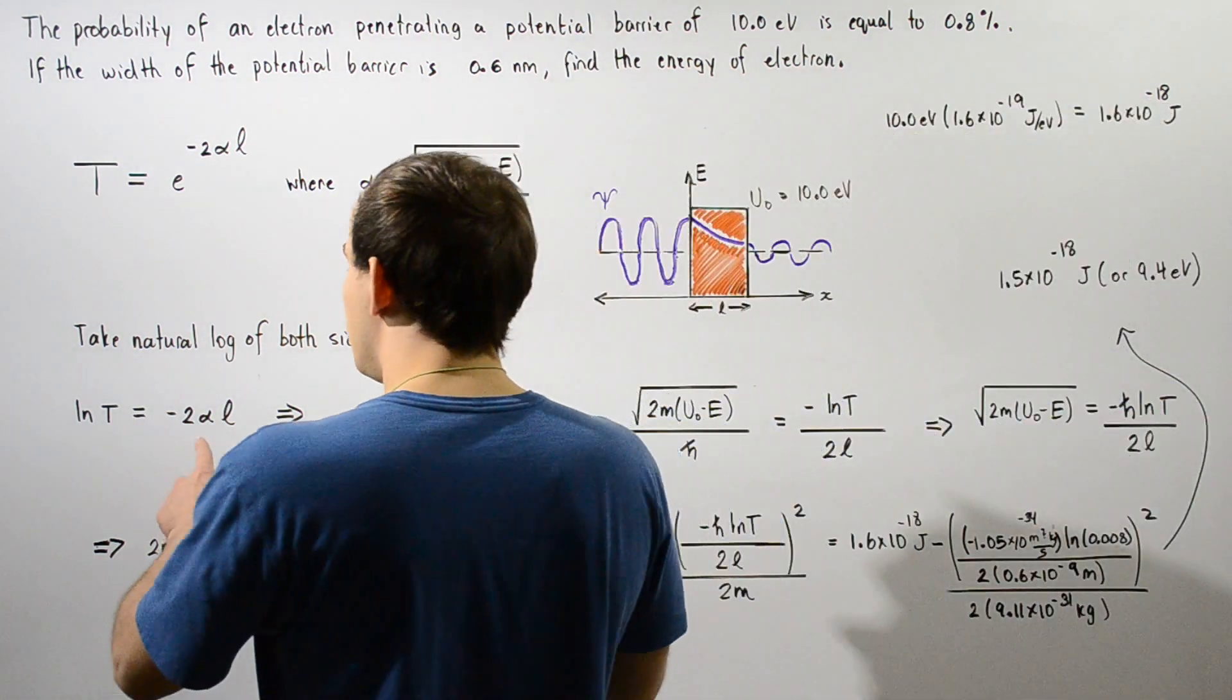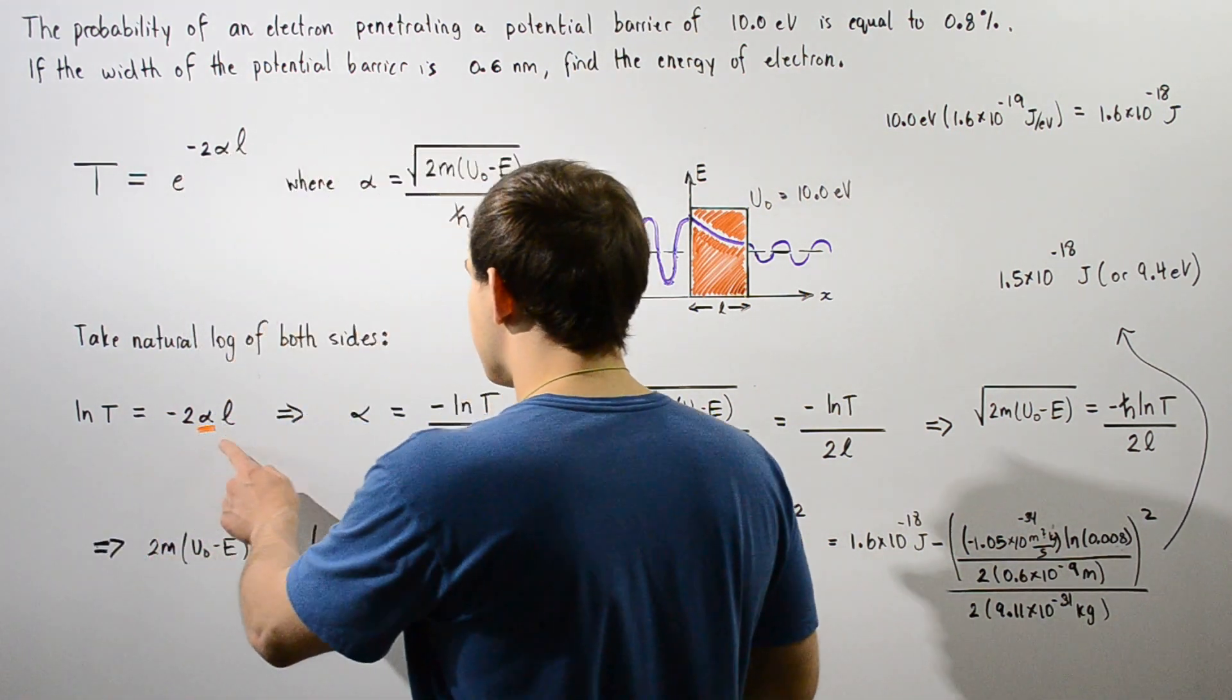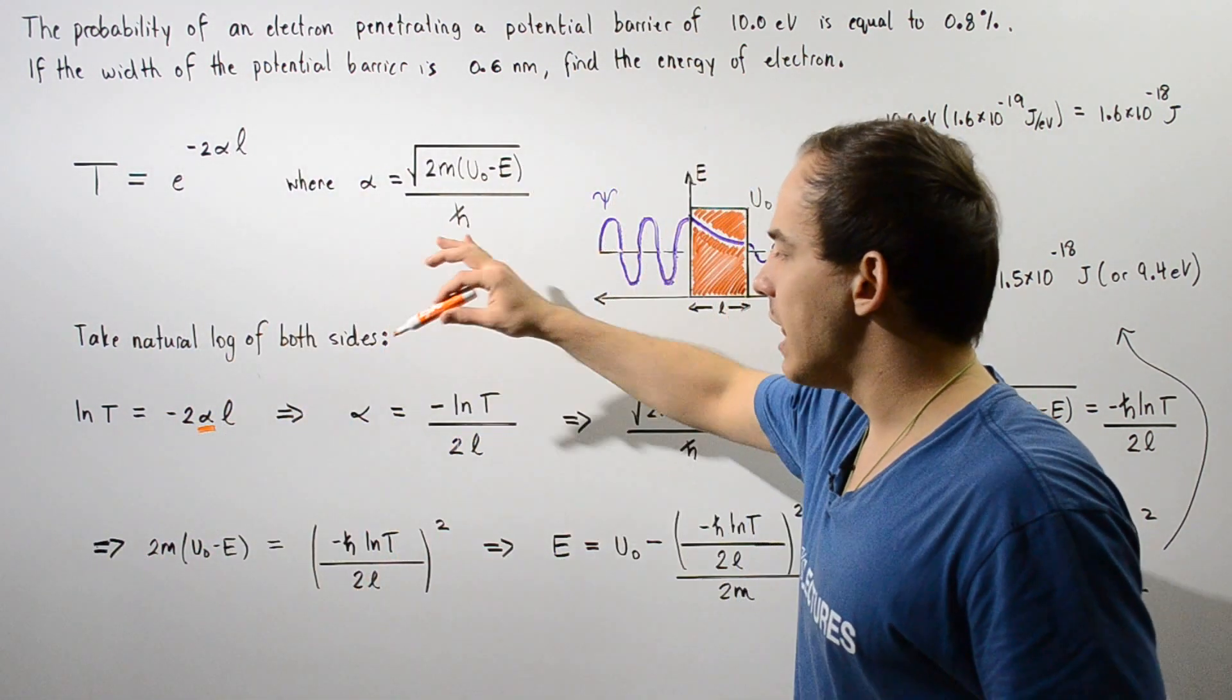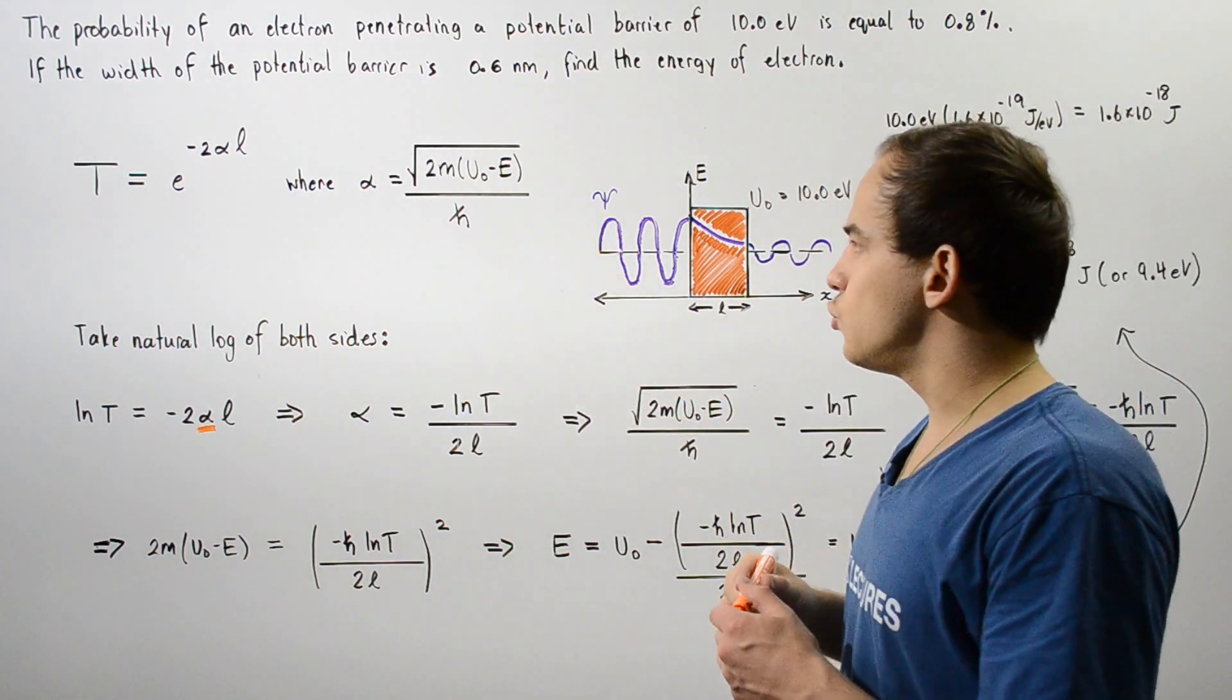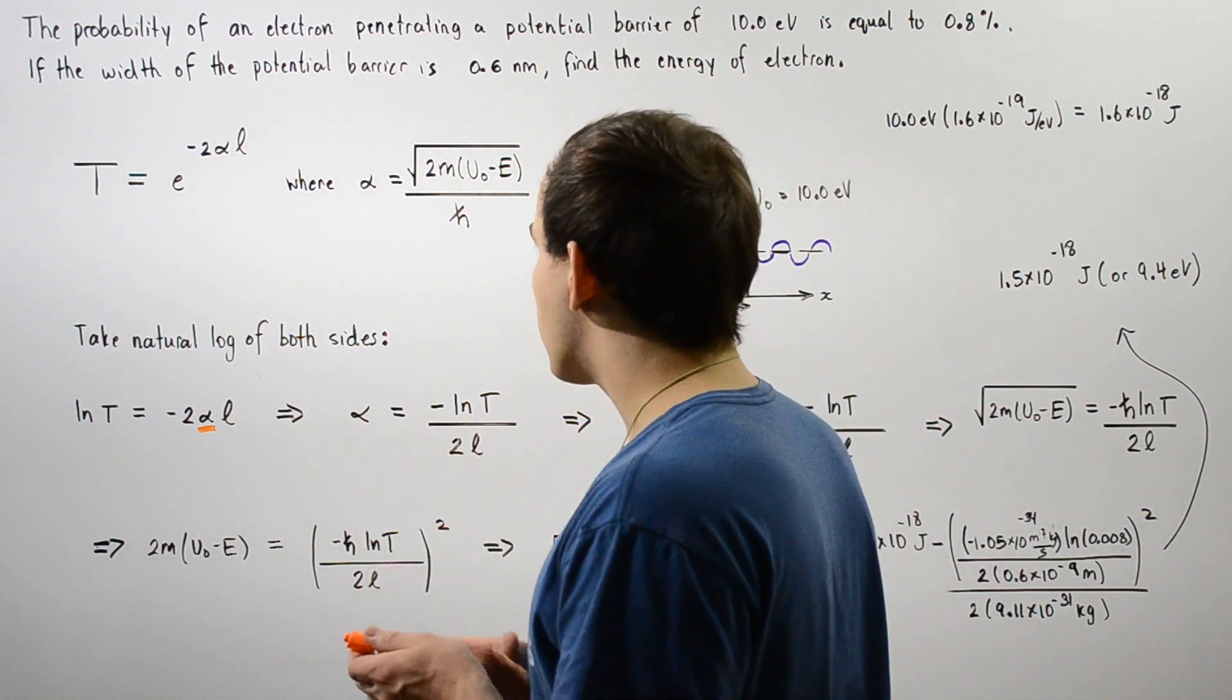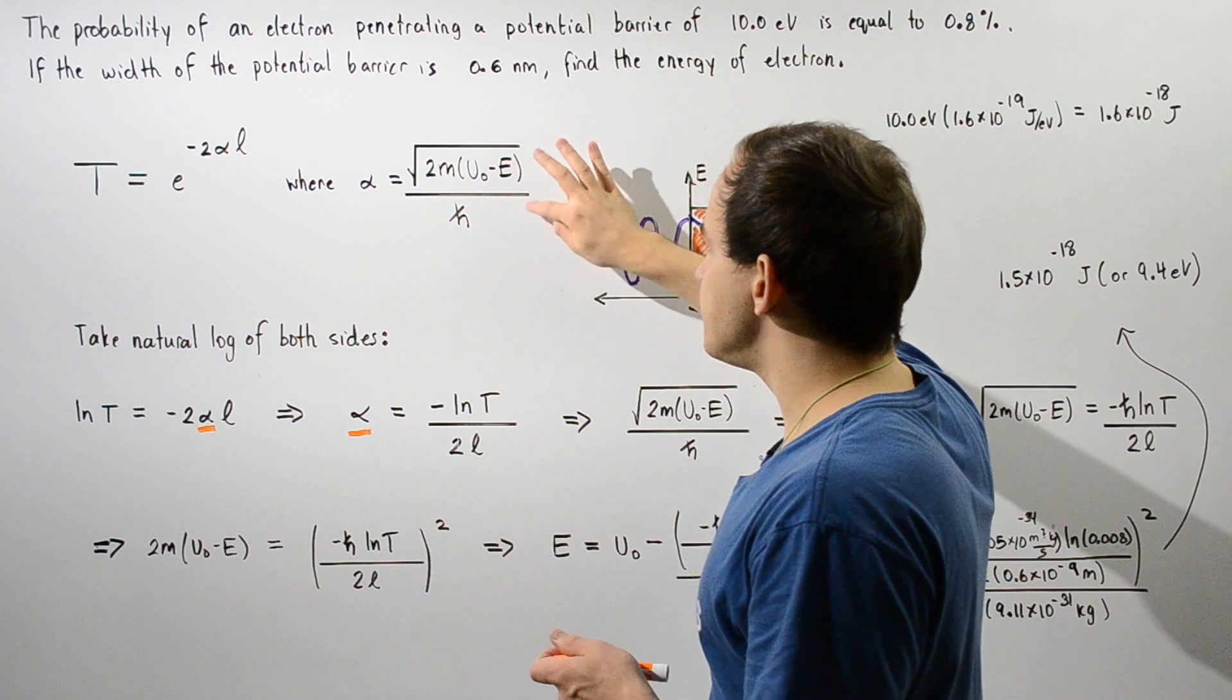In the next step, we want to solve for our alpha. If we solve for alpha, we see that alpha is equal to negative natural log of T divided by 2L. Now we take our alpha and we want to replace our alpha with this equation.